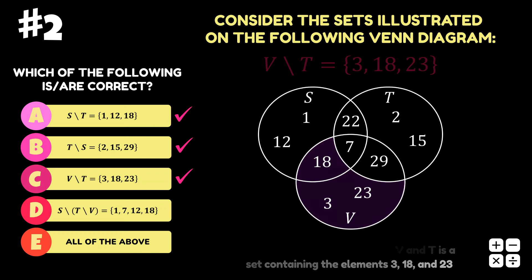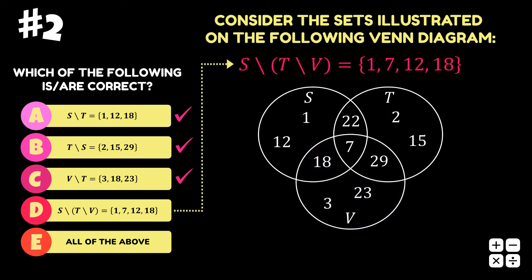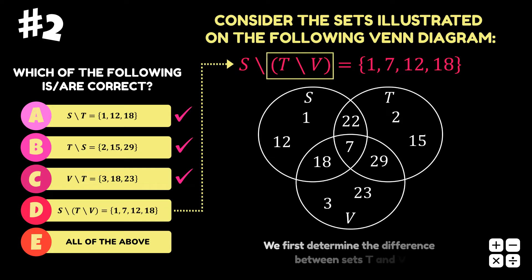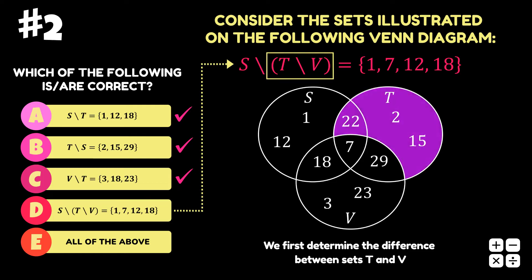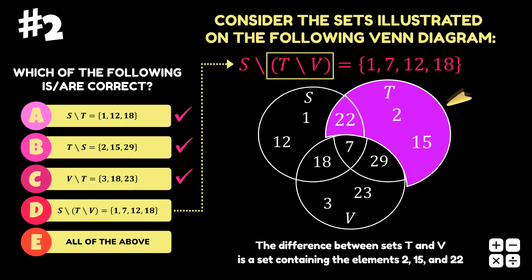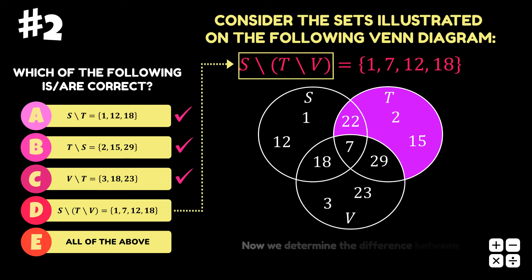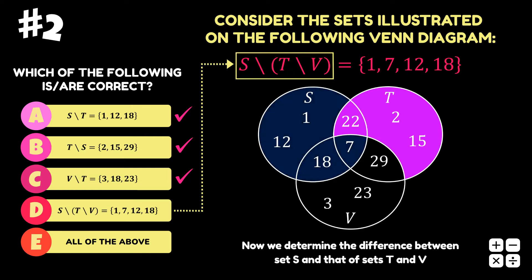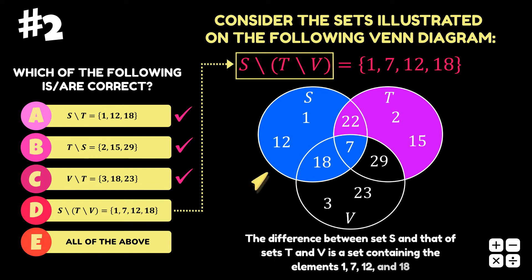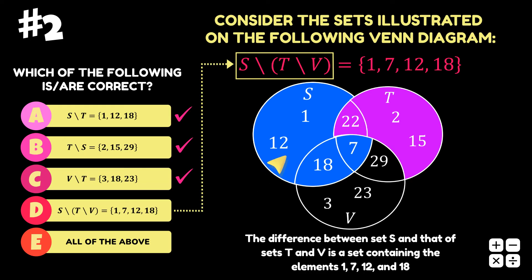Option D is the difference between set S and that of sets T and V. We first determine the difference between sets T and V. Looking at the Venn diagram, this set difference is the area in purple — that is, the area occupied by set T that is not occupied by set V. The difference between set S and that of sets T and V is the area in blue, that is, the area occupied by set S that does not include the area in purple. The elements in the blue area are 1, 7, 12, and 18.